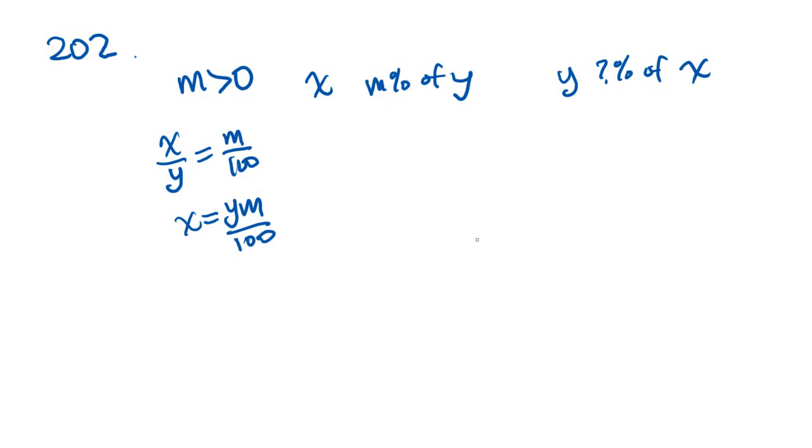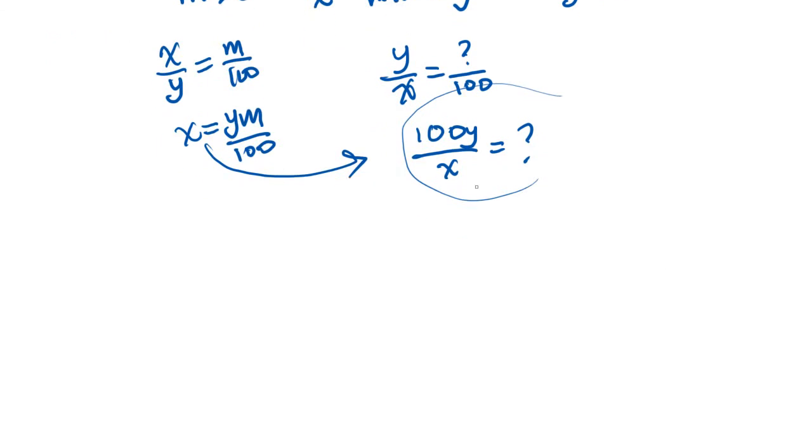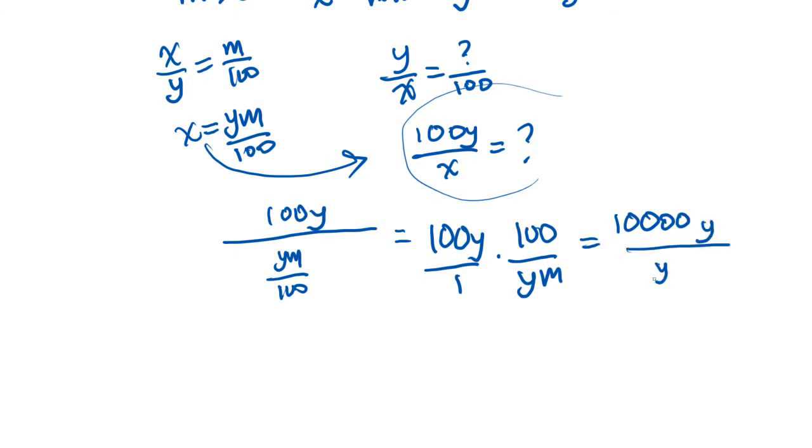They also tell us that we are looking for Y is what percent of X. So basically Y over X equals what percent over 100, right? So then you just cross multiply and you get 100 Y over X is what we're looking for. If this is what we're looking for, why don't we just plug this X into it and then figure out what the answer is. So if we plug X into the denominator, we get 100 Y over YM over 100. That's going to be the same as 100 Y over 1 times 100 over YM, which is equal to this. Cancel out the Y's and the answer we're left with is 10,000 over M and that is E.